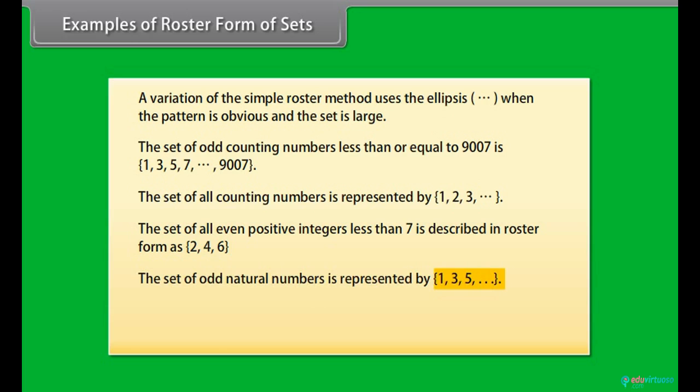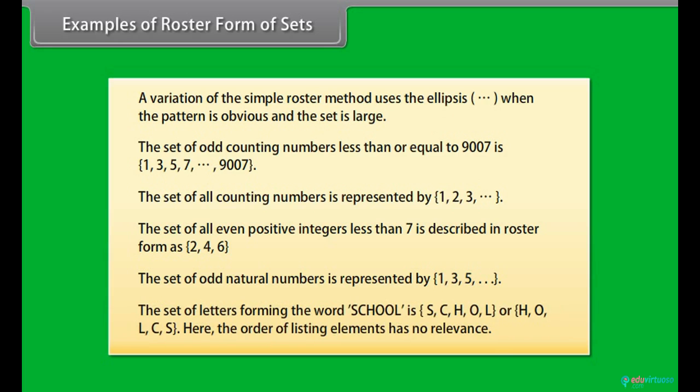The set of odd natural numbers is represented by 1, 3, 5 and so on. The set of letters forming the word school is S, C, H, O, L. Here the order of listing elements has no relevance.